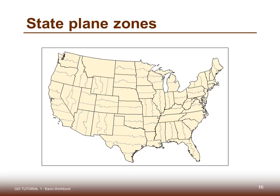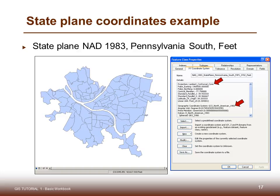Here we see it in practice. In Ohio, for example, we have Ohio north and Ohio south state plane coordinates using the Lambert conformal conic projection. Indiana, though, has a different orientation and uses the Universal Transverse Mercator projection. Here's the map of Pittsburgh now projected in state plane coordinates instead of just being in a simple unprojected geographic coordinate system.